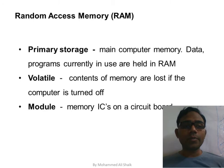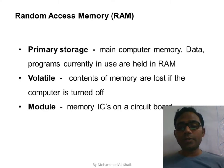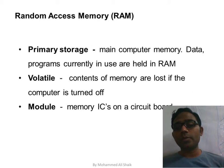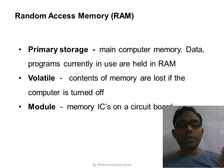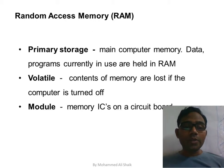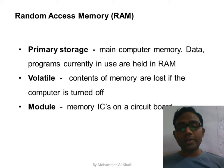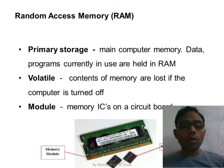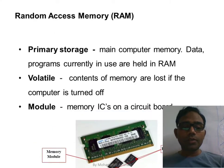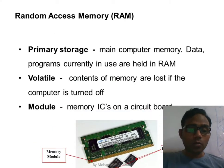RAM (Random Access Memory) is the primary storage or main computer memory. Data and programs currently in use are held in RAM. Whenever you execute a program, load a movie, or play an audio file, it must first be loaded into RAM. RAM is volatile — once power is lost, all data in RAM is lost. The black blocks on the RAM module are called modules.